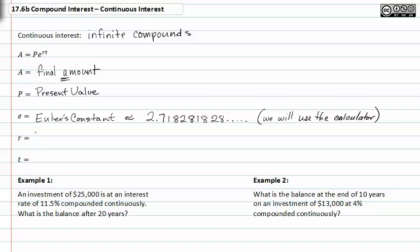R is the interest rate, and T is the time in years.